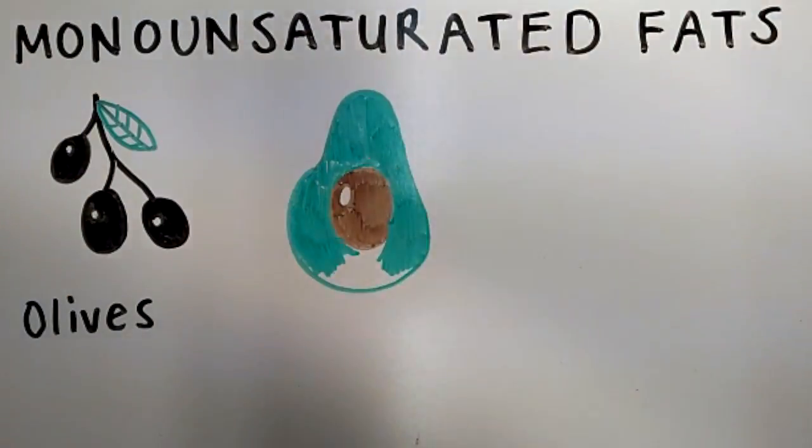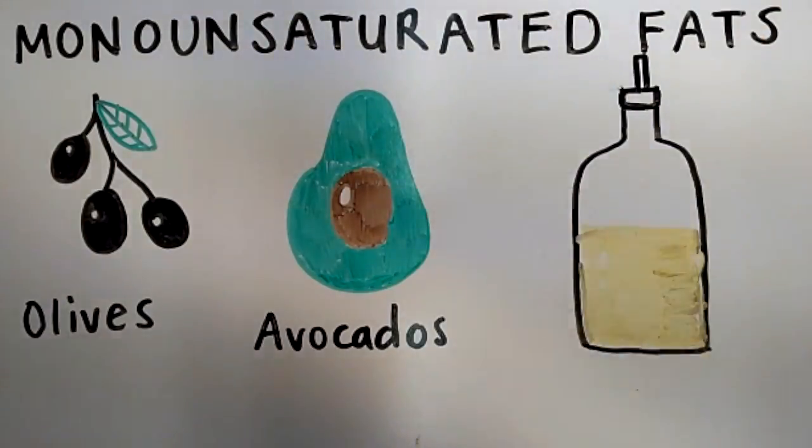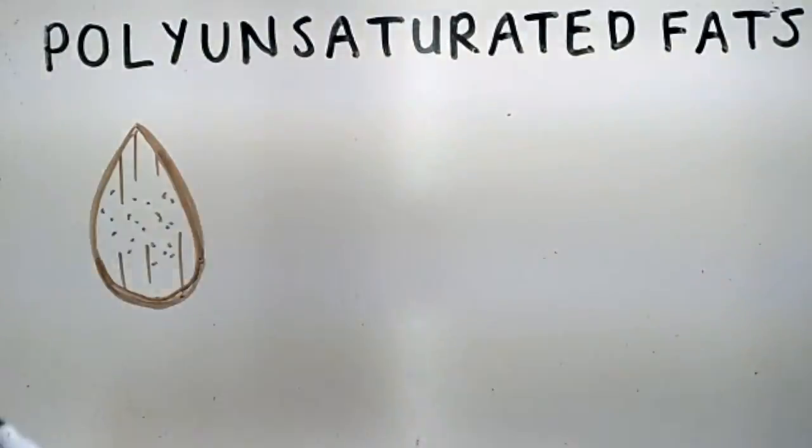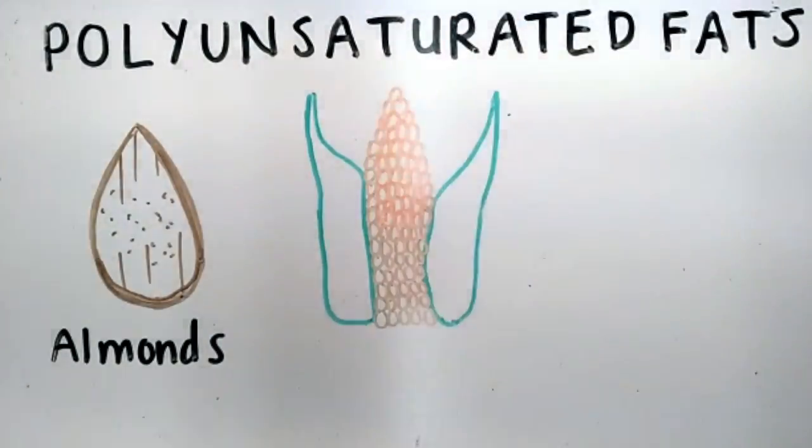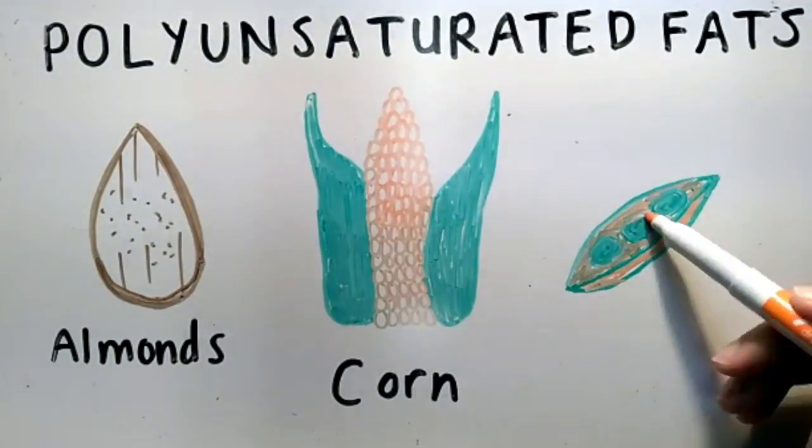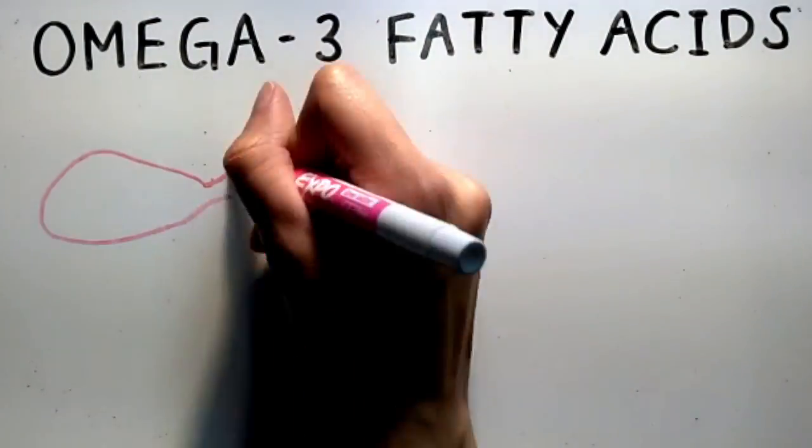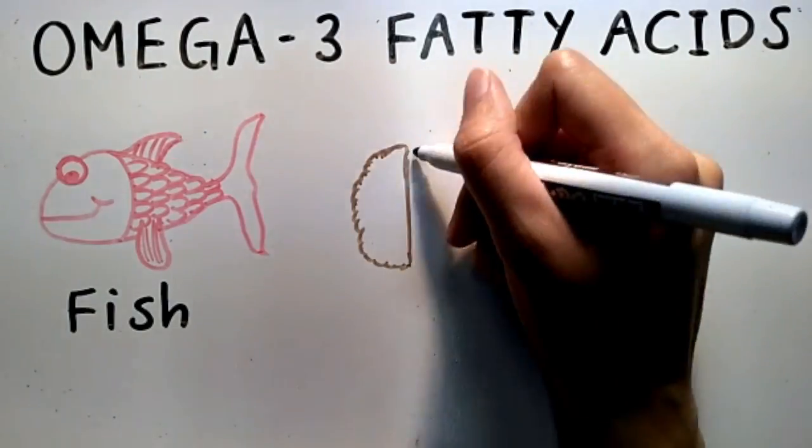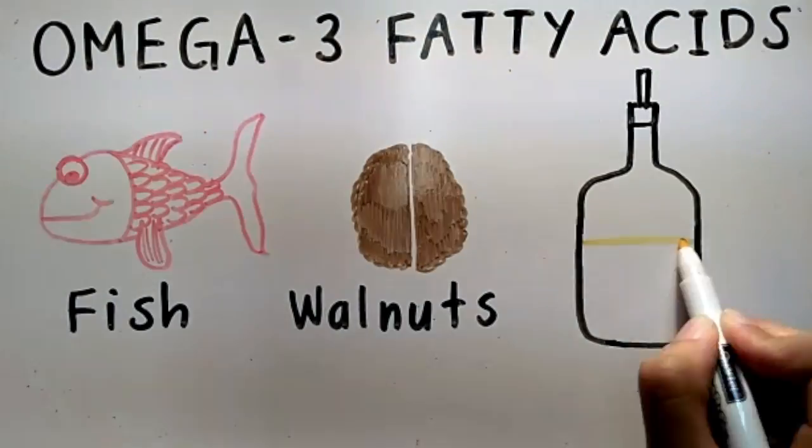Monounsaturated fatty acids are found in different kinds of foods and oils. Polyunsaturated fatty acids are found in plant-based foods and oils. Omega-3 fatty acids are a type of polyunsaturated fat that are found in fish oils and some plants.